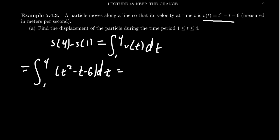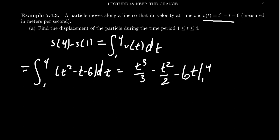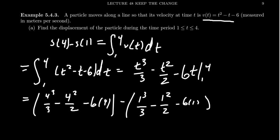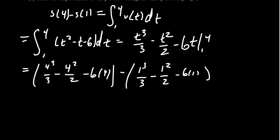By properties of integration and the power rule for antiderivatives, we get t³/3 minus t²/2 minus 6t, evaluated from one to four. Now we hit the most arduous part — the arithmetic. Plugging in four: 4³/3 minus 4²/2 minus 6 times 4, and then we subtract the result of plugging in one: 1³/3 minus 1²/2 minus 6 times 1.